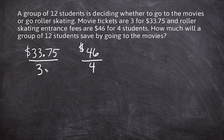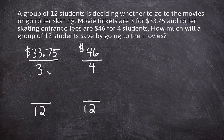Notice that the numbers three and four are both factors of 12, so we can scale these rates up to represent the cost for 12 students. Three can fit into 12 exactly four times, so we scale up by four, which means we have to scale $33.75 up by four. And this is scaled up by a factor of three, so we have to multiply $46 by three.